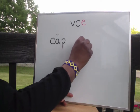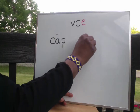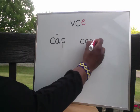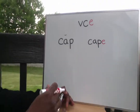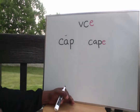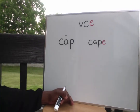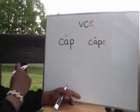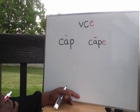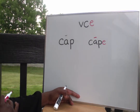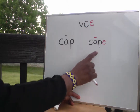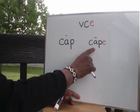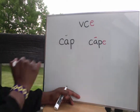But if I add an E to the end of it, this E does something to the vowel. Do you know what it does? It changes the vowel sound and makes it have a long vowel sound. A long vowel sound just says the name of the letter. So with this E at the end, my word has changed from cap to cape.